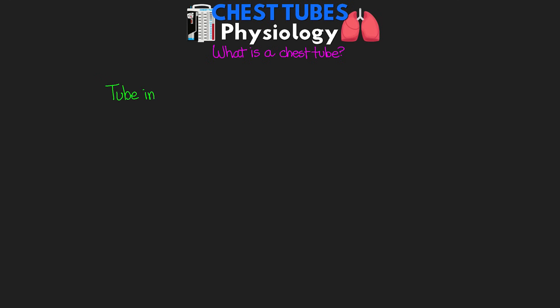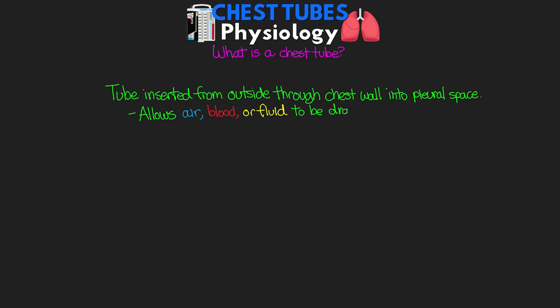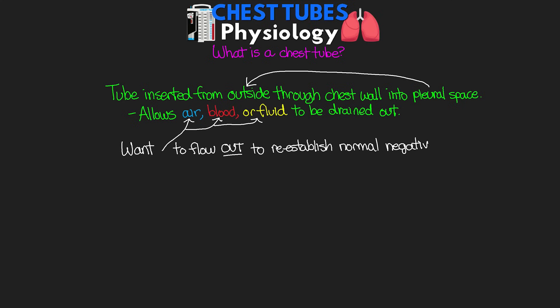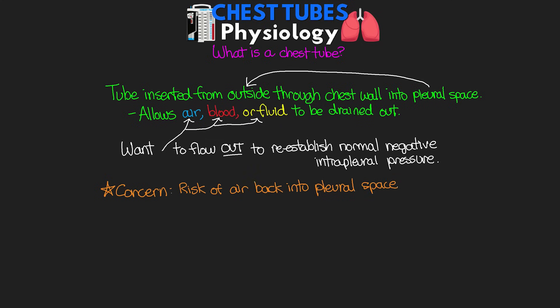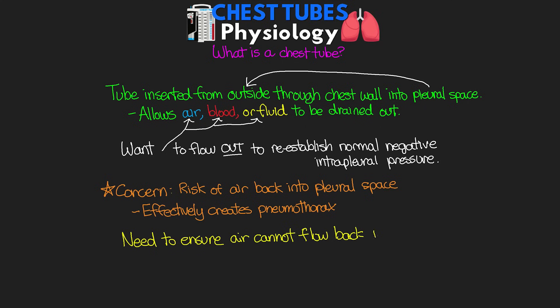So let's talk about what exactly a chest tube is. At its most basic, a chest tube is a tube inserted from the outside through the chest wall and into the pleural space, allowing air, blood, and/or fluid to be drained out of the pleural space. The chest tube creates a path of communication from that pleural space to the outside. We want the air, blood, or fluid to flow out in order to re-establish that normal relatively negative intrapleural pressure and allow the lung to re-expand. One concern is the risk of air flowing back into the pleural space, which would effectively create a pneumothorax — counterproductive to what we're trying to achieve. So we need to ensure that air and fluid can drain out while not allowing air back in.